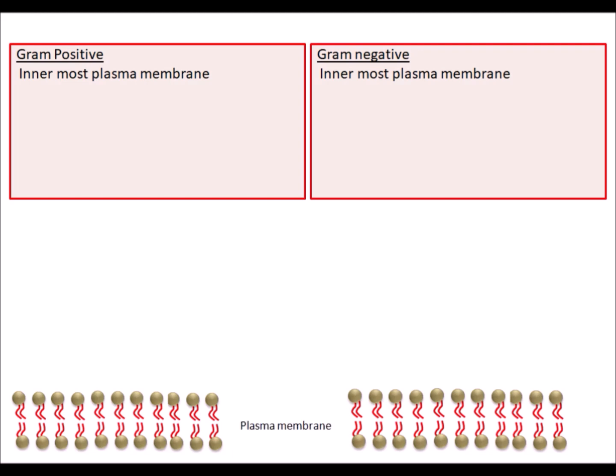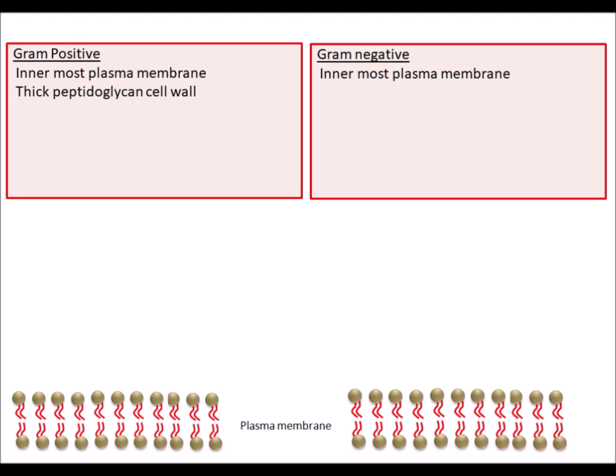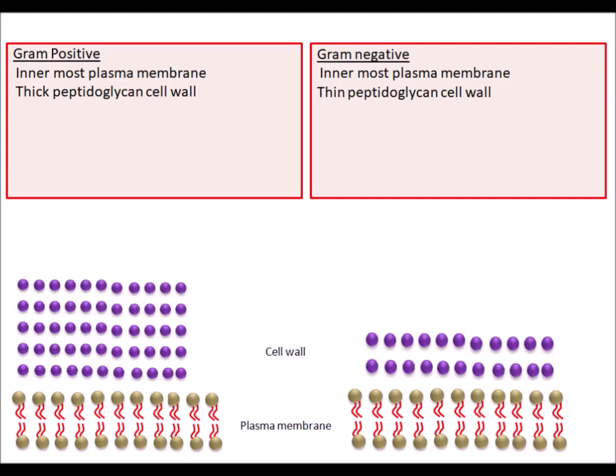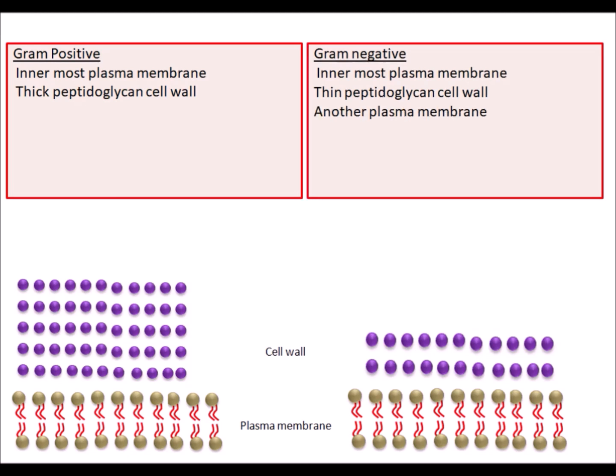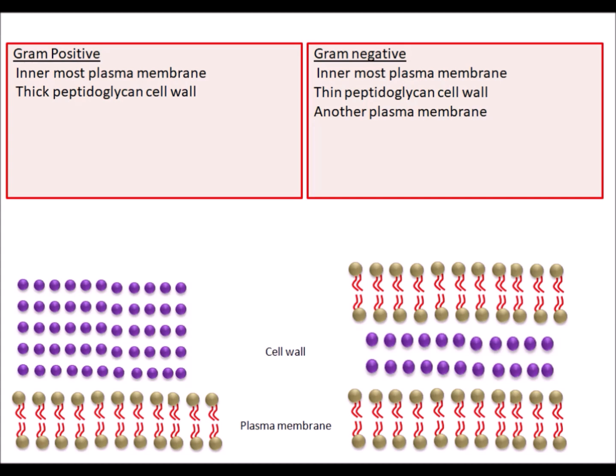Now look at the Gram-negative bacteria — it has another plasma membrane which plays an important role in Gram staining. The outer layer is called the capsule, which is the sticky outer layer. We can find the capsule in both Gram-positive and Gram-negative bacteria.